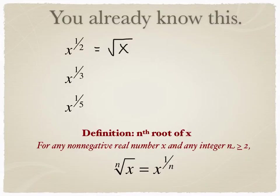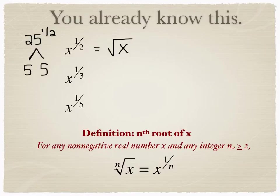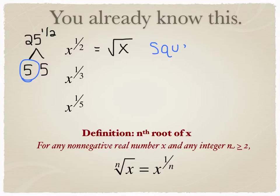Think about 25 to the one half power — that means split 25 into two equal factors. Well, 5 is the square root of 25. So a power of one half is the same thing as a square root, and that's what we call it: a square root when it's split into two pieces. That's probably the one you're most familiar with.